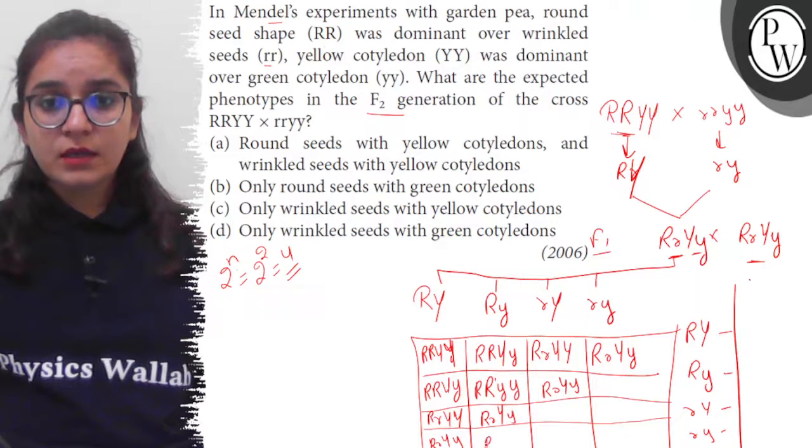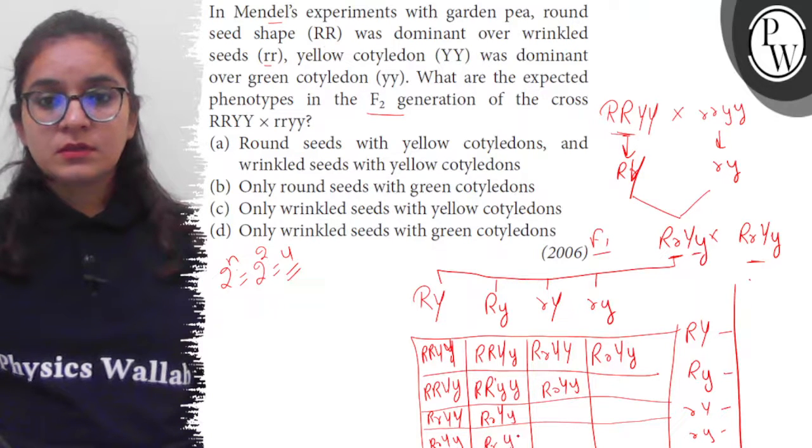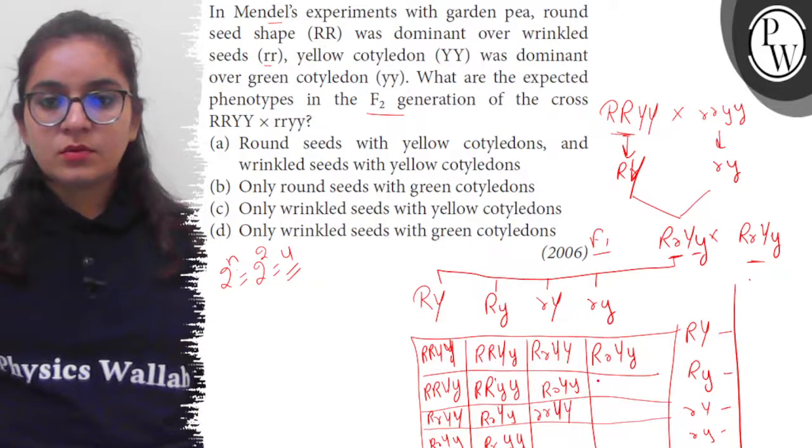Now here, heterozygous round green. Here, wrinkled yellow, homozygous yellow. Here, heterozygous round and green.